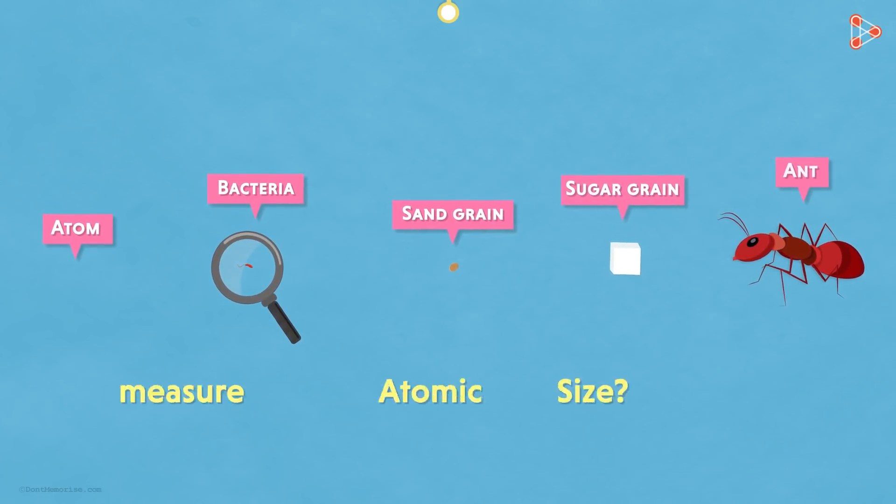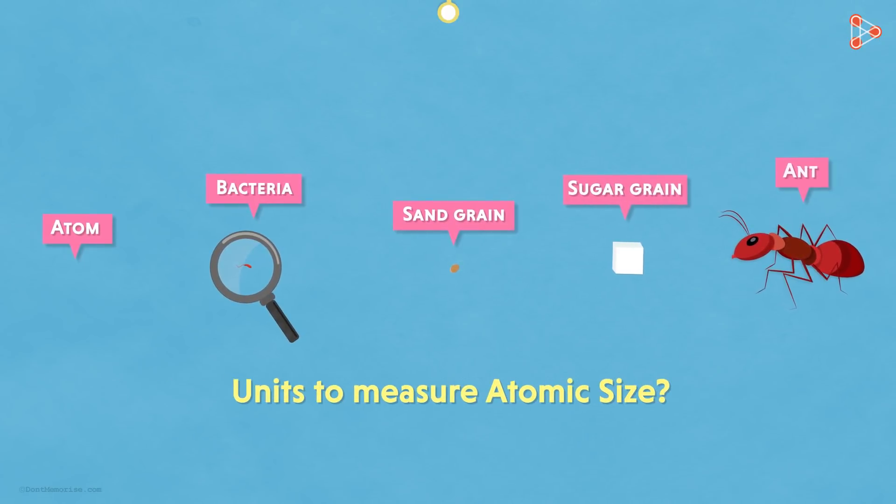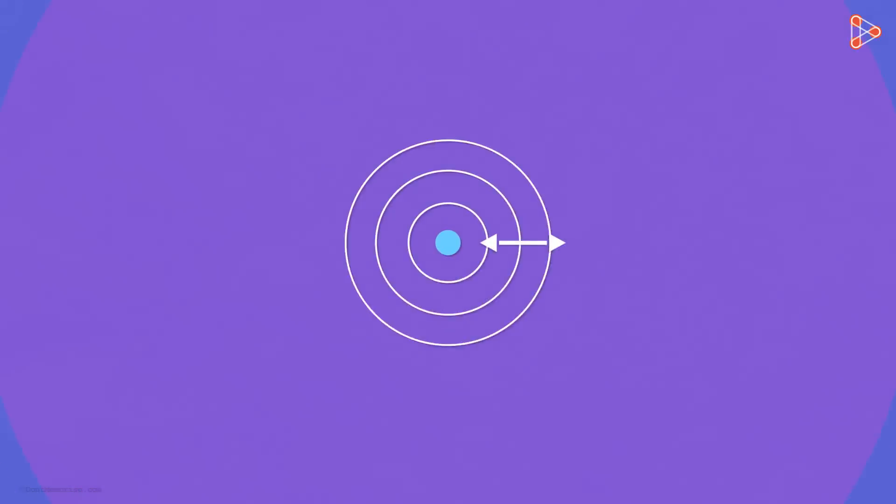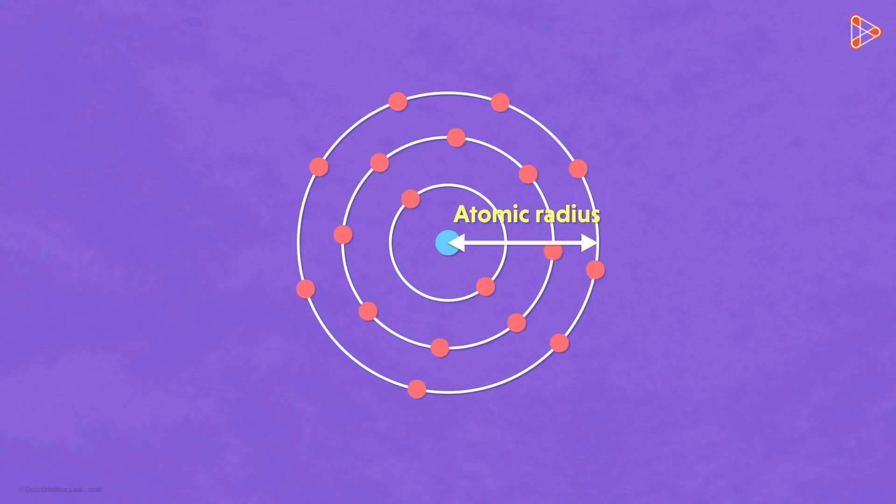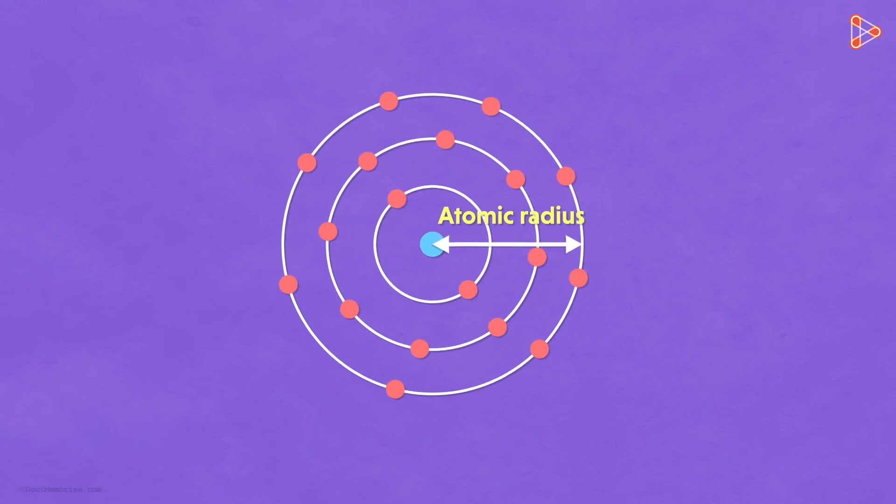So that means there will be no units to measure it either, right? No, that's incorrect. Despite the fact that it's so tiny, we still measure the size of an atom with atomic radius. The radius of an atom is measured using units like nanometers.